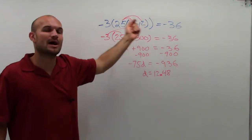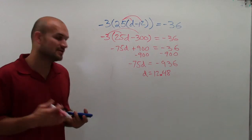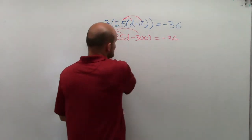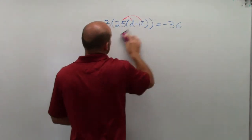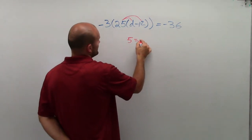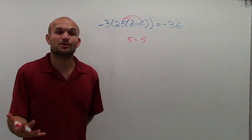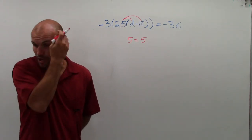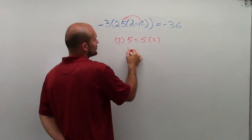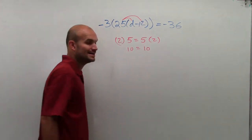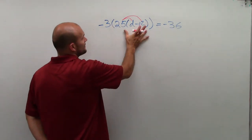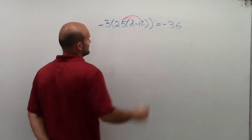Another thing we can do is what we actually call getting rid of distributive property. So let's take a look at something. You know that if I have, say, 5 equals 5, well, you know that's true. And you know the multiplication property of equality states that if you multiply the same number on both sides, you produce equivalent equations. So if I look at this, you see that I have negative 3 times all of this stuff, and then this negative 36.